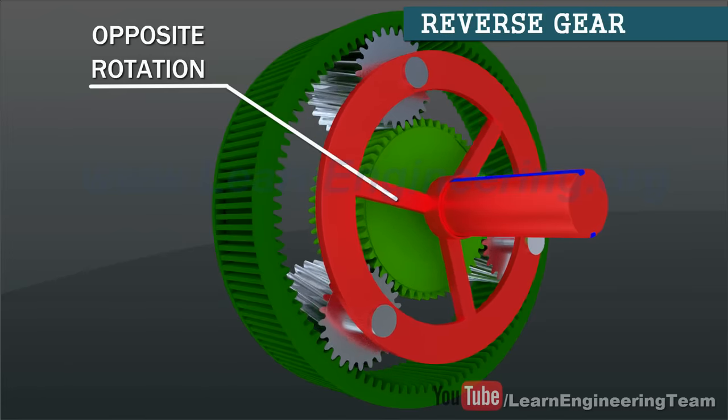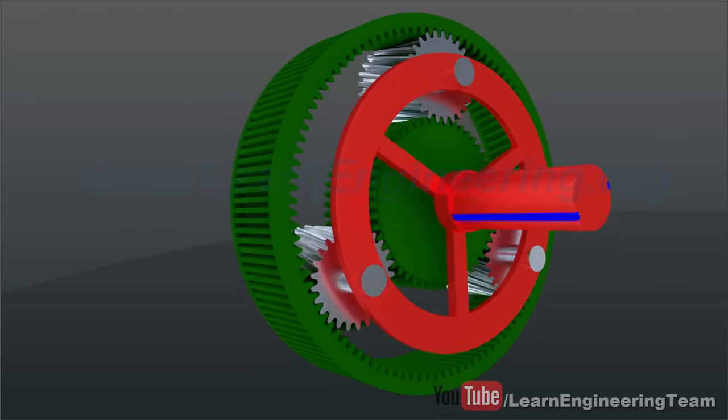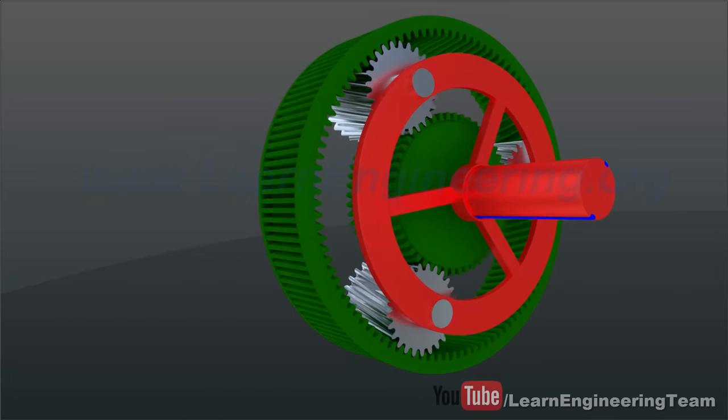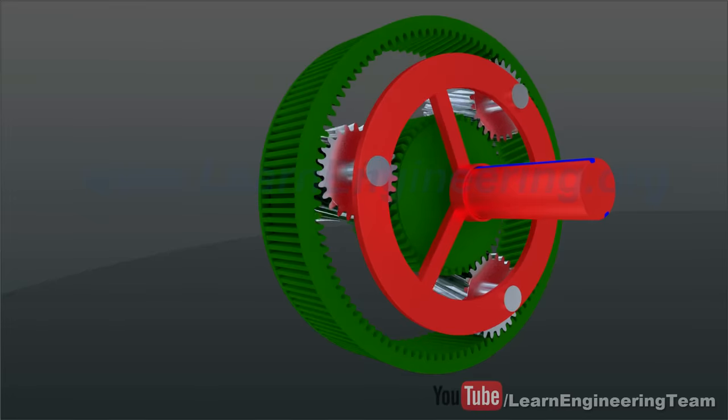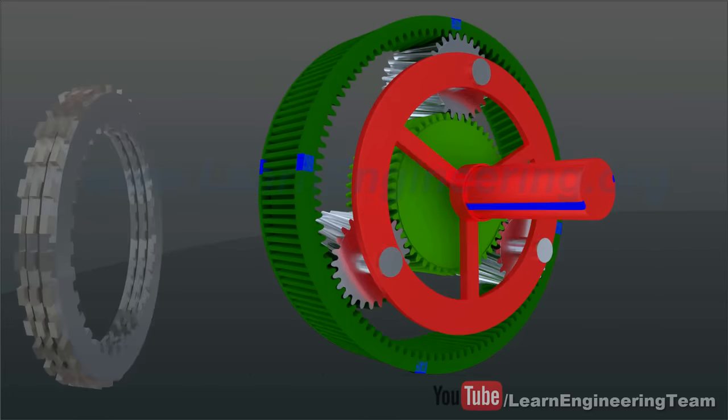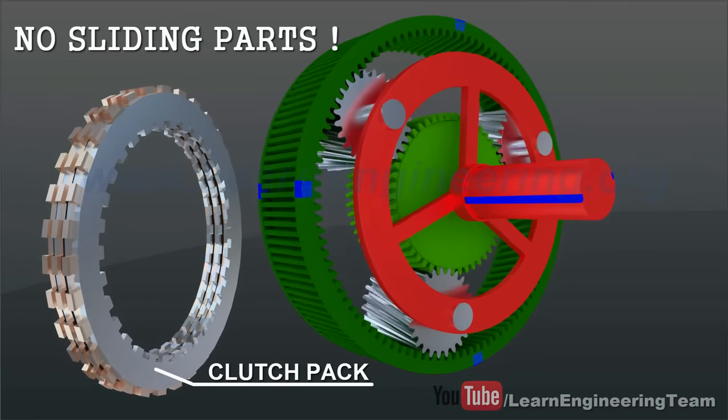So, the operation of automatic transmission is all about transmitting different rotational speeds into the ring and sun gears. The beauty of automatic transmissions is that this speed variation can be transmitted simply by engaging few clutch packs. In the coming sessions, we will see how this is achieved in Allison.